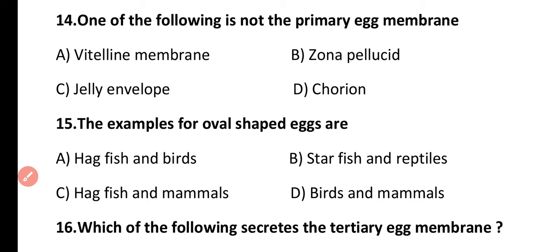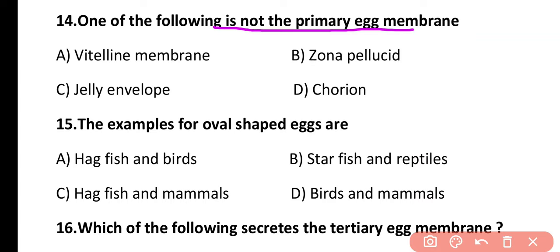Question 14. One of the following is not a primary egg membrane: vitelline membrane, zona pellucida, jelly envelope, or chorion? The correct answer is option D. Chorion is not a primary egg membrane. The vitelline membrane is a primary egg membrane present in amphibians, birds, and mollusks. Jelly envelope is a primary egg membrane of echinoderms, while zona pellucida is a primary egg membrane of mammals.